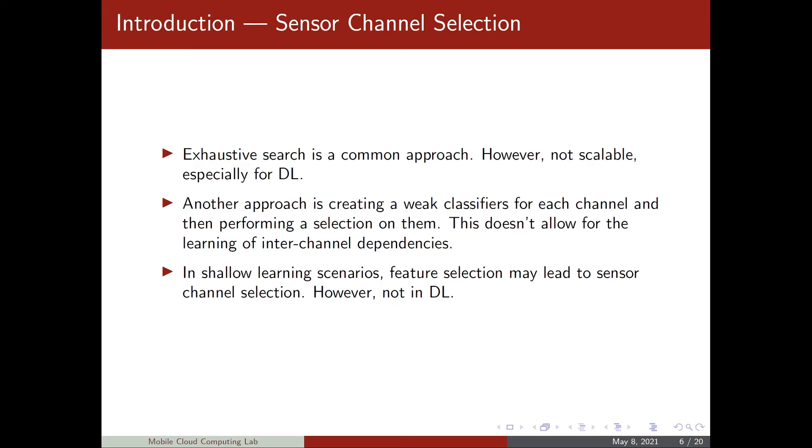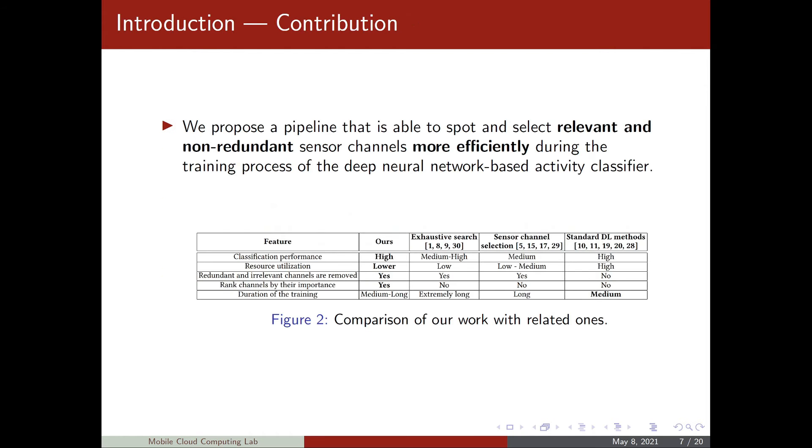Another way that only works in shallow learning scenarios is feature selection. Usually, in shallow learning scenarios, each feature comes from only one sensor channel. So if we perform feature selection and all the features that come from a specific sensor channel are removed, then we are certainly performing sensor channel selection. However, this is not the case for deep learning. In deep learning, the features that are learned are a black box. They come from a combination of all the sensor channels in an unpredictable way.